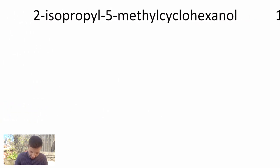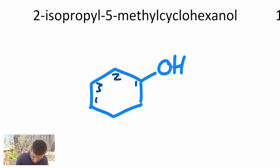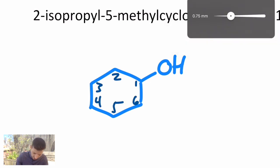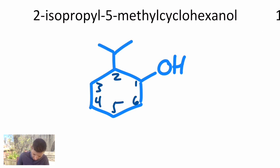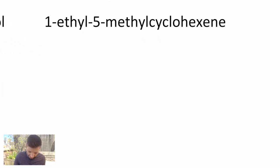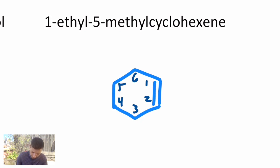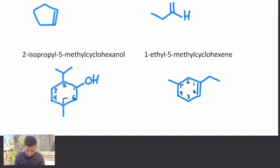2-isopropyl-5-methylcyclohexanol: I read the end of the name first. Cyclohexanol is a six-carbon chain with an OH. Because it's in a ring, it's implied that carbon one is where the OH is. I'll go around the ring and number the rest. On two, I have an isopropyl. That looks like that V coming off of a carbon. And then carbon five, I have a methyl. Lastly, 1-ethyl-5-methylcyclohexene: cyclohexene is a six-carbon chain with an alkene. Because it's in the ring, it's implied that that is carbons one and two. Off of one is an ethyl and off of five is a methyl.